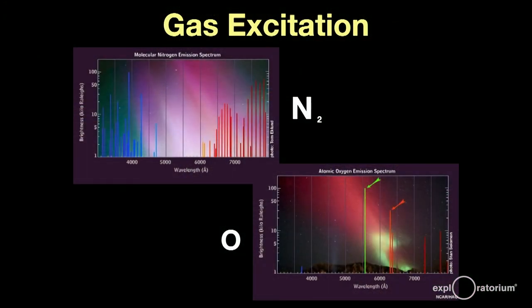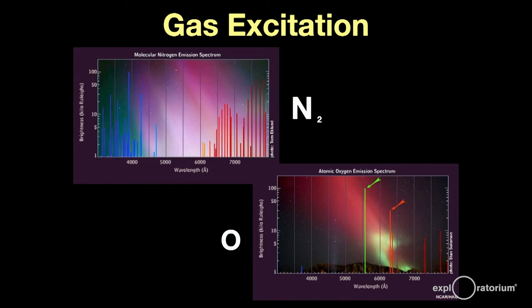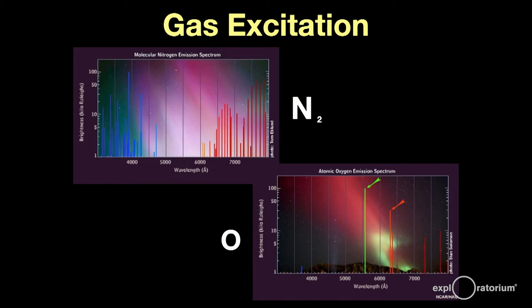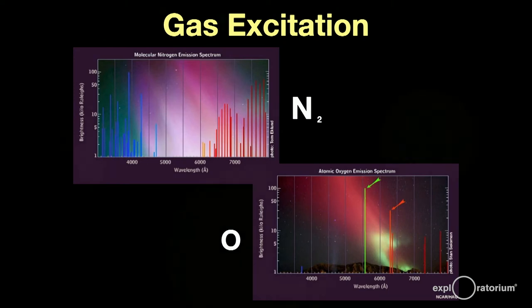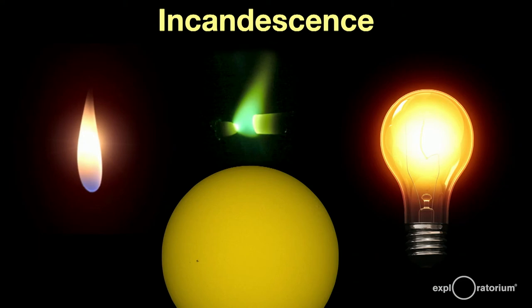Like lightning, you can look at the spectra of aurora and analyze their atmospheric gases, which, not unexpectedly, include nitrogen and oxygen. Now, let's look at a different, though similar way that light is made. Incandescence.